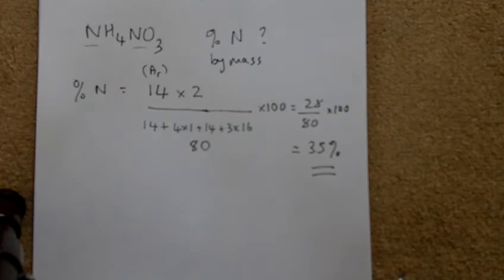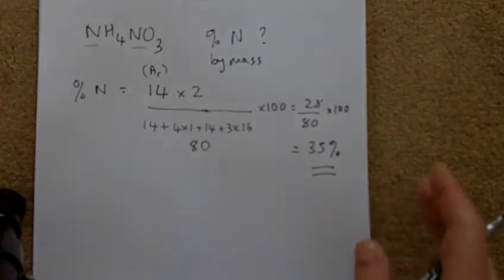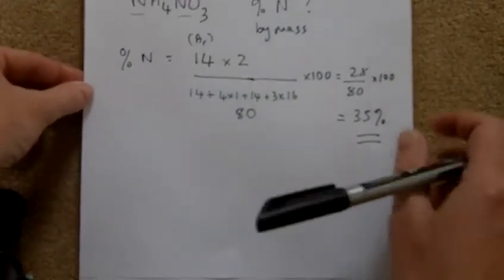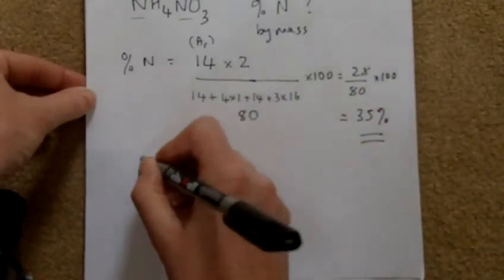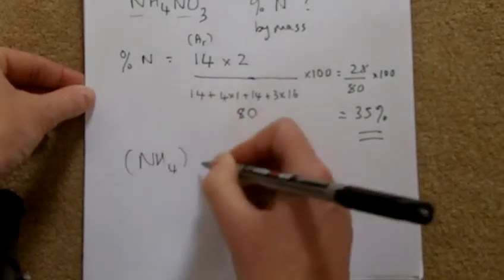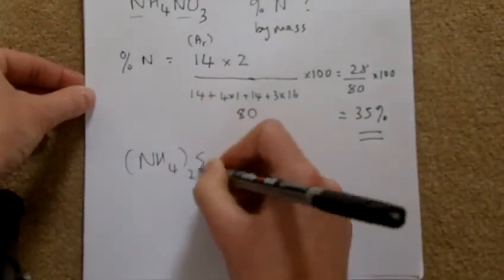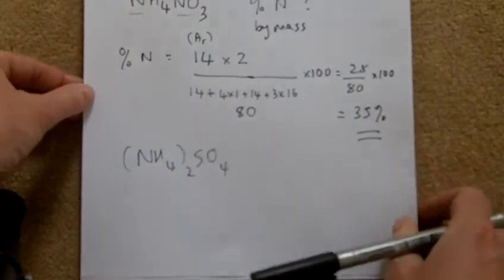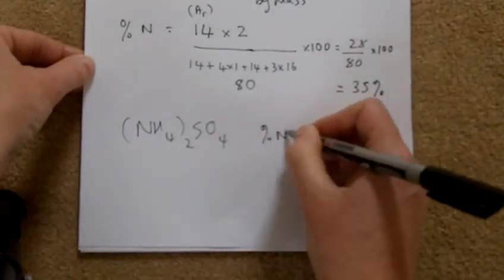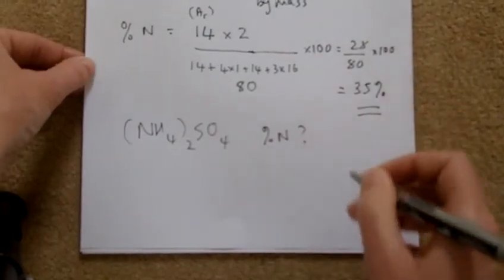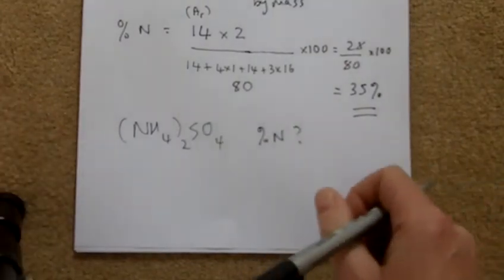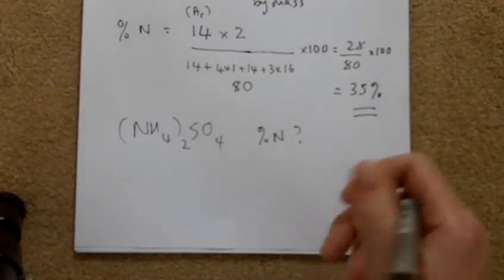You can compare fertilizers — for example, does ammonium sulfate have more nitrogen by mass? Is it a better fertilizer? These are the sorts of calculations you need to be able to do.